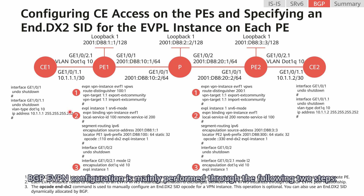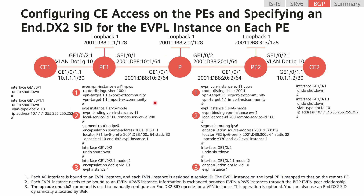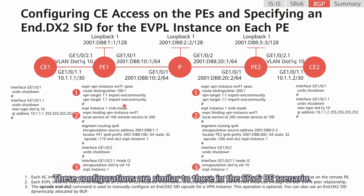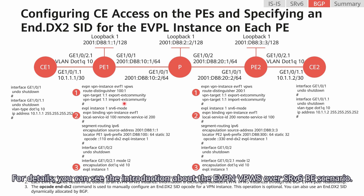BGP-EVPN configuration is mainly performed through the following two steps. First, configure an EVPL instance and CE access on each PE. Second, establish a BGP-EVPN peer relationship between the PEs to transmit VPWS information. These configurations are similar to those in the SRV6BE scenario. For details, you can see the introduction about the EVPN VPWS over SRV6BE scenario.